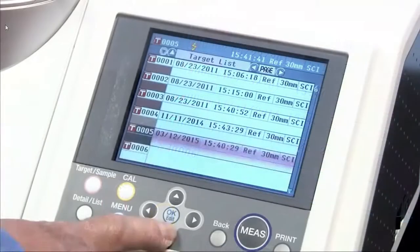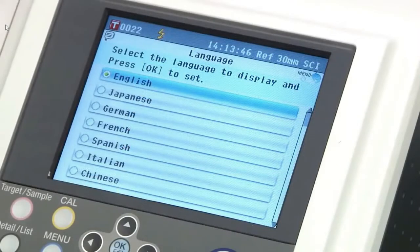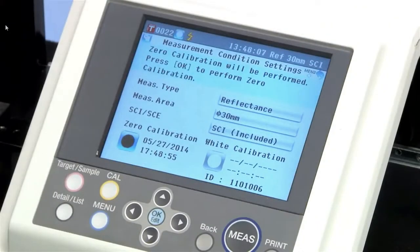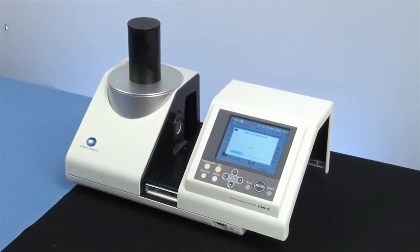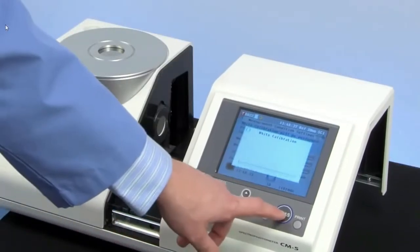To begin, switch the instrument on and perform zero calibration, then white calibration before each color measurement session. There is also an option to perform white calibration automatically. After calibration, place your sample on the top port or in the transmittance chamber.